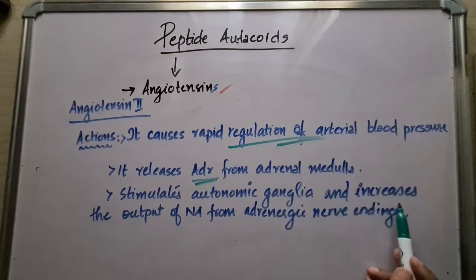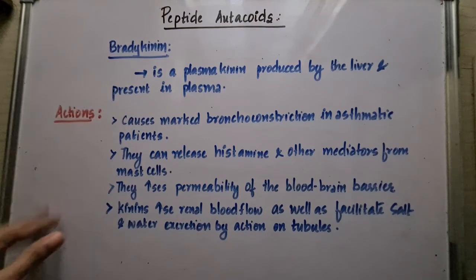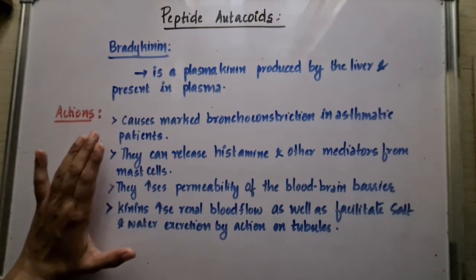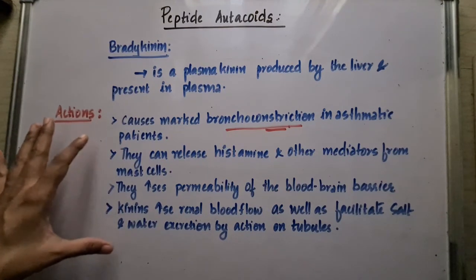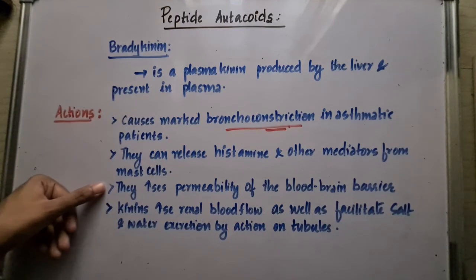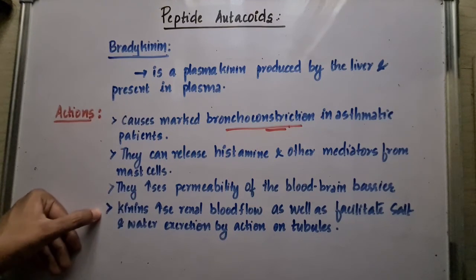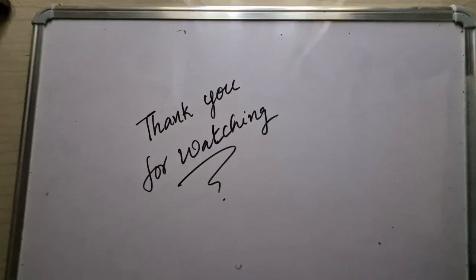The next peptide autacoid is bradykinin, a plasma kinin produced by the liver and present in plasma. Its actions include: causing marked bronchoconstriction in asthmatic patients by acting on the smooth muscles of the bronchi; releasing histamine and other mediators from mast cells; increasing permeability of the blood-brain barrier; and increasing renal blood flow while facilitating salt and water excretion by acting on renal tubules.